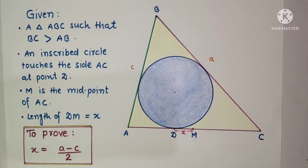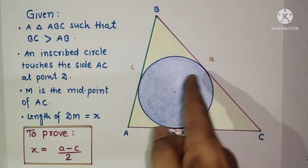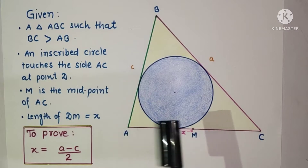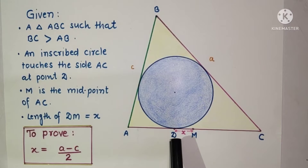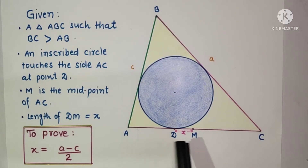Hi everyone, welcome to this channel. In this problem we are given a triangle ABC such that BC length is greater than AB length, so angle A is greater than angle C. An inscribed circle is drawn which touches side AC at point D. M is the midpoint of side AC, and DM is given as X. We have to prove that X equals (a minus c) divided by 2.